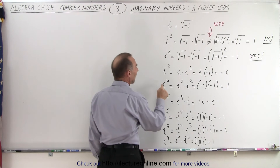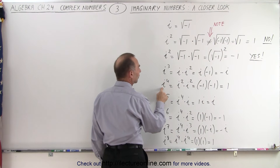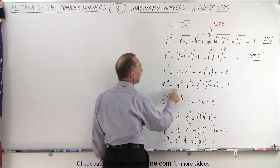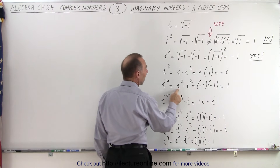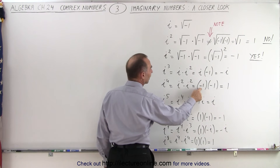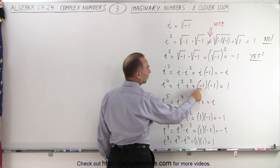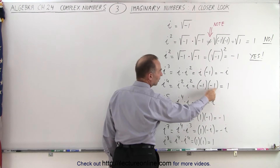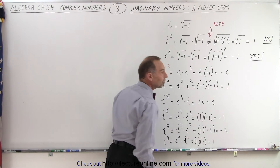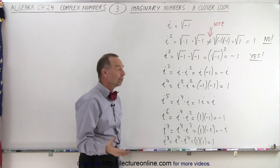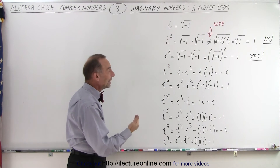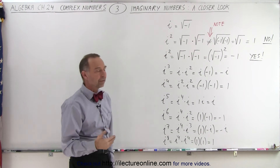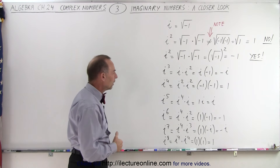i to the fourth power can be written as i squared times i squared. Since i squared is equal to negative 1, this becomes negative 1 times negative 1, which gives us positive 1. So i to the fourth power equals positive 1.